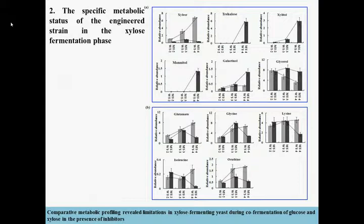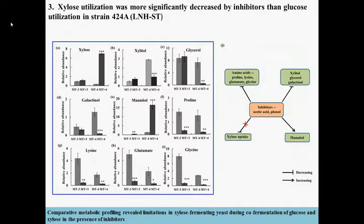The metabolomics results also pointed out that the xylose catabolic pathway and energy supply were the limiting steps in xylose fermentation in the presence of inhibitors. These results provided new insights into the underlying mechanisms of limitations on glucose and xylose fermentation with or without inhibitors, and also improved the opportunities for further engineering xylose-metabolizing yeast.